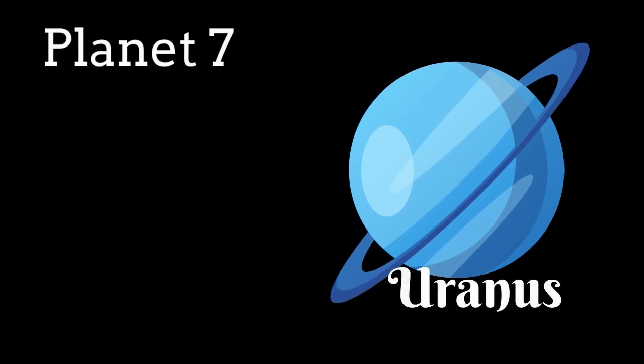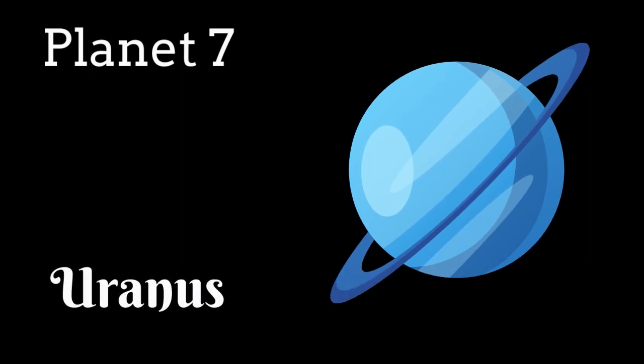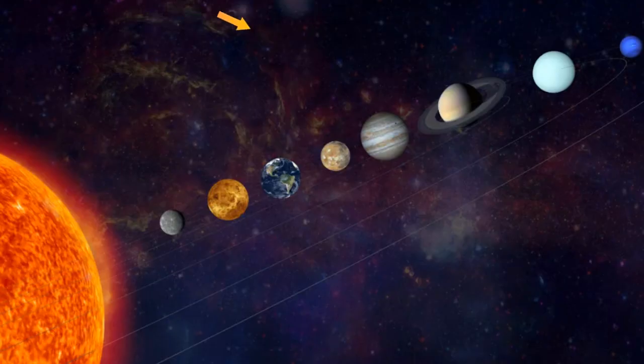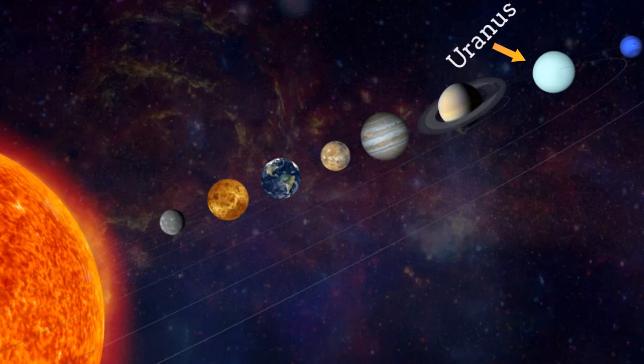The 7th planet is Uranus, another gas planet. Uranus is the 7th planet from Sun, and it is in between Saturn and Neptune.